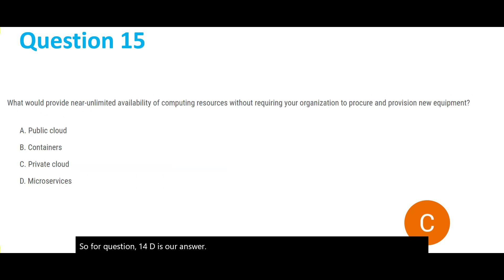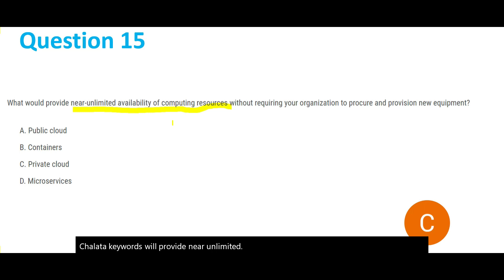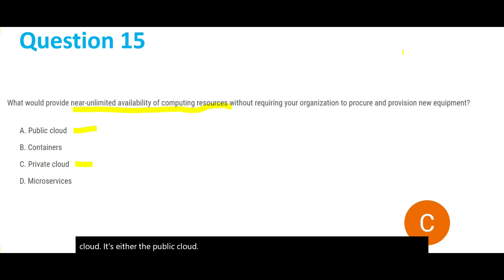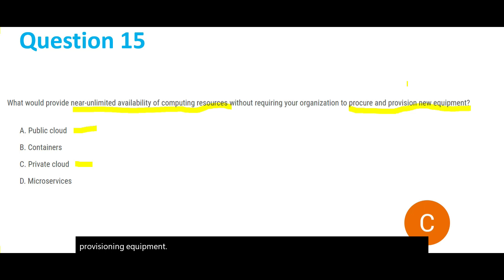Let's head on to question 15, the last question of this part. What would provide near-unlimited availability of computing resources without requiring your organization to procure and provision new equipment? The key phrase 'near unlimited availability of computing resources' tells us it is a cloud. The second part — without requiring procurement and provisioning of new equipment — means the answer is public cloud, because in a private cloud, organizations do have to procure and provision new equipment. So for question 15, A, public cloud, is the answer.